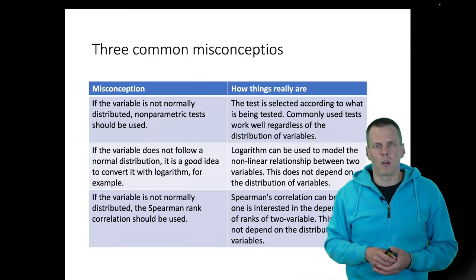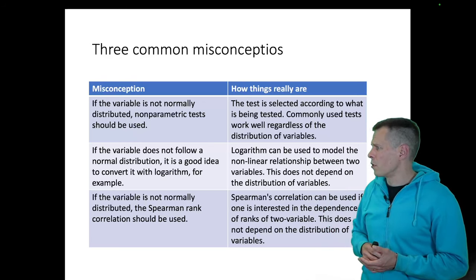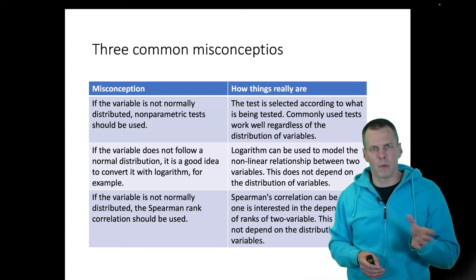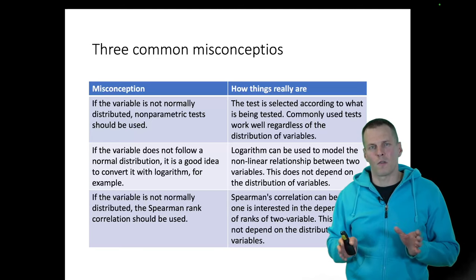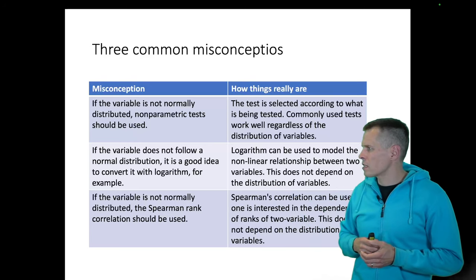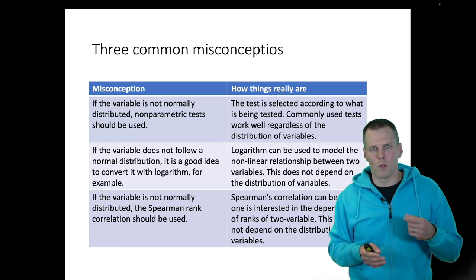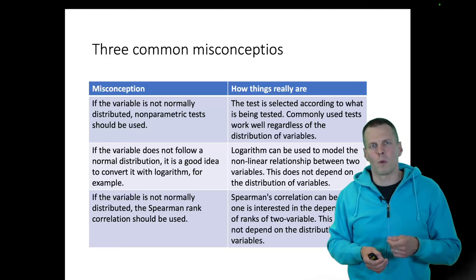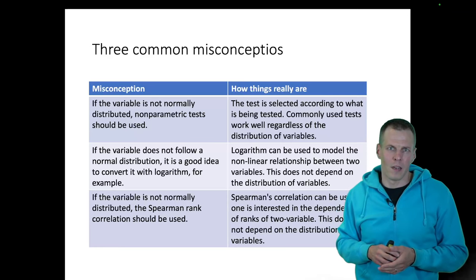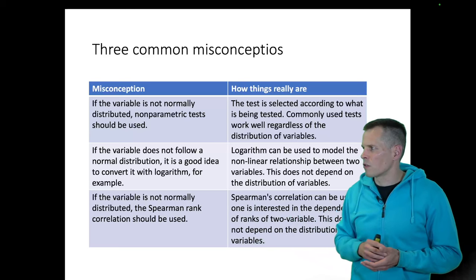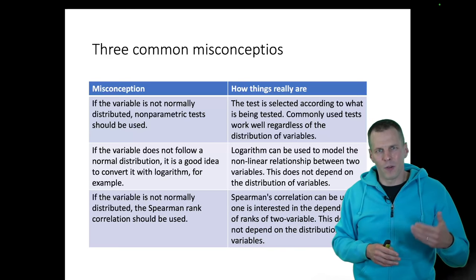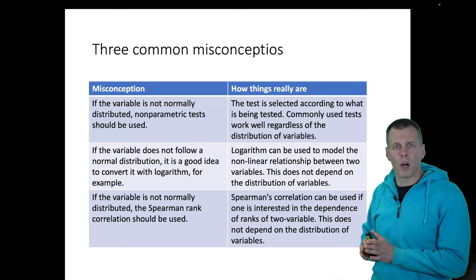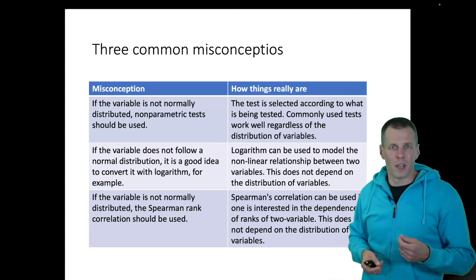Here is a summary of three common misconceptions. First: if the variable is not normally distributed, non-parametric tests should be used. In reality, you should always pick the test based on what you're testing — if you're testing differences between means, use a t-test regardless of the distribution. Second: if data are non-normal, convert them with a logarithm. Not true — transformations are useful for modeling non-linear relationships but have little to do with whether data are normally distributed. Third: if the variable is not normally distributed, use rank correlation — but rank correlation models a different kind of relationship than linear correlation, and you pick based on how two variables vary together, not their individual distributions.